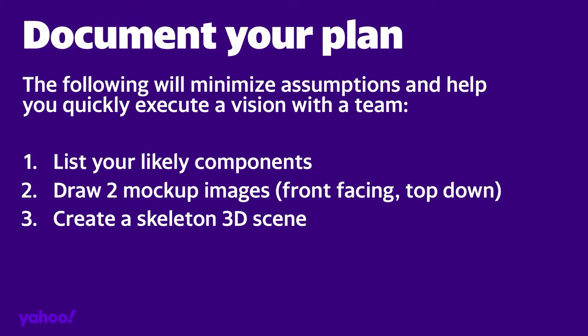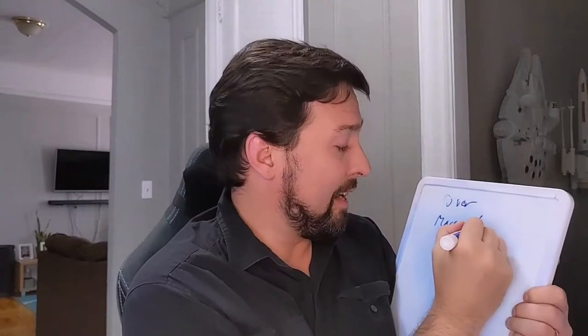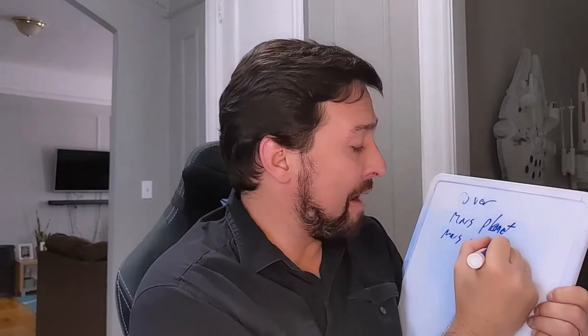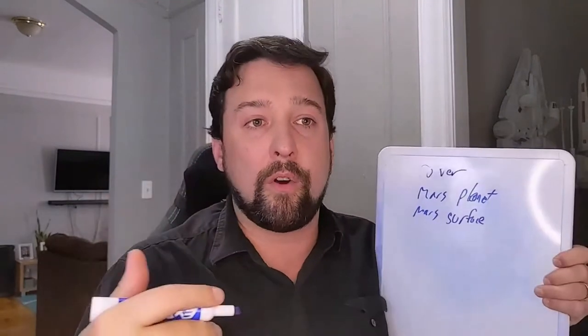We have a bit of a plan: a quick one-day scene of the 3D asset of the Mars Rover landing on Mars. The first thing you need to do is document your plan. I'm going to list all of the likely 3D models I want to collect for this production — a rover, a Mars planet, maybe the Mars surface. I may not know everything else I need yet, but I'm thinking: what are at minimum the ones I need to search for? And I need to be specific.